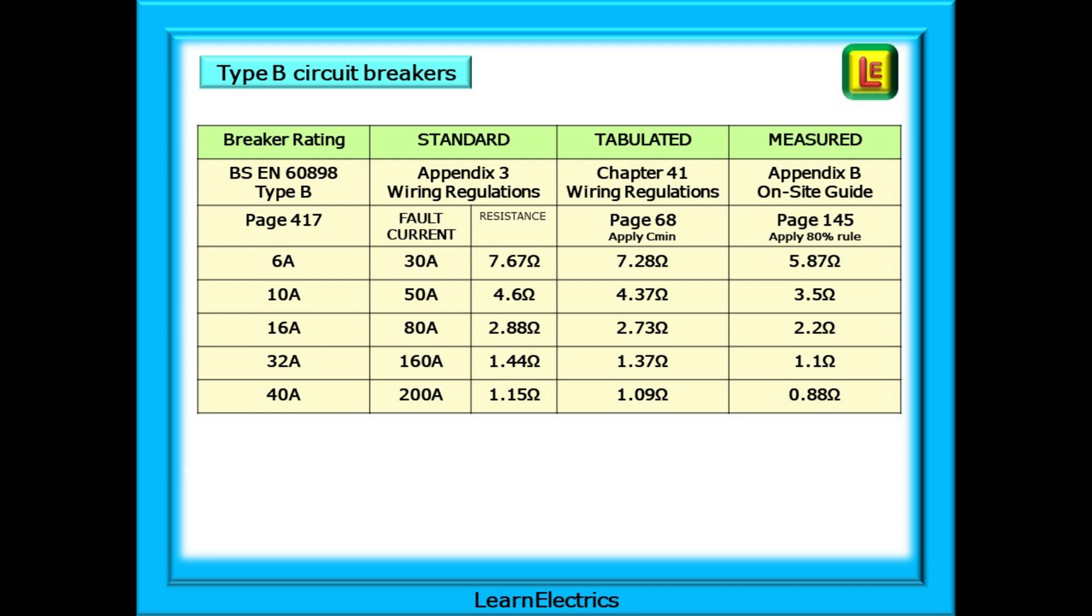And finally, this table shows the progression from the standard values through the tabulated values and on to the measured ZS values for a selection of Type-B breakers. Similar to the previous table, it shows that as the breaker rating increases, the required fault current increases and the maximum ZS values decrease. A similar pattern with totally different results would be obtained from Type-C and Type-D breakers. And it might be worth your time to make the same calculations as here, but starting with the C and D data that is shown in Appendix 3 on pages 418 and 419. I'll leave that one with you.